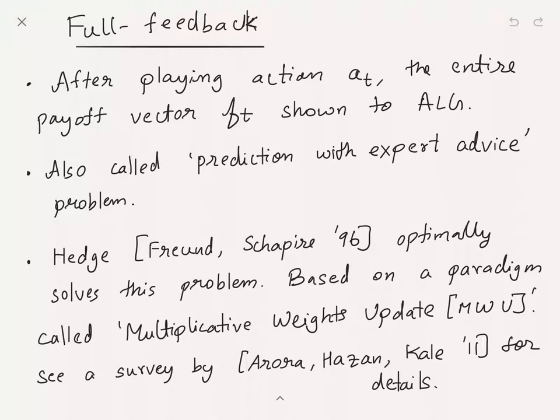In this lecture we will talk about this well-known algorithm called Hedge, due to Freund and Shapire from 1996. This optimally solves the problem and achieves asymptotically optimal regret. This algorithm is based on the multiplicative weights update paradigm, or MW. Since this algorithm came out, this paradigm has been rediscovered and variants have been used in many other problems. I would refer you to this excellent survey by Arora, Hazan, and Kale from 2011 where they give applications of the multiplicative weight update algorithm, especially in theoretical computer science.